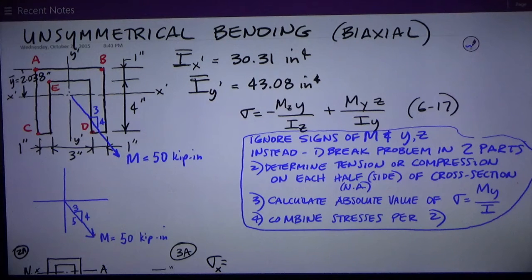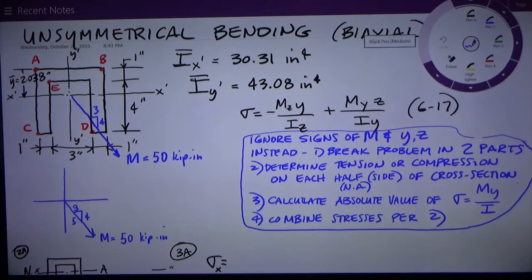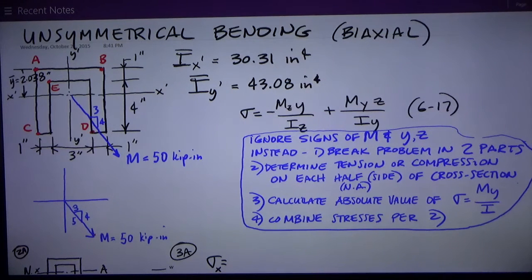I've done another video where I calculate y-bar and Ix, I-bar x-prime for that shape. And I've calculated these section properties: Ix is 30.31 inches to the fourth, I-bar y-prime about that vertical centroidal axis is 43.08 inches to the fourth.